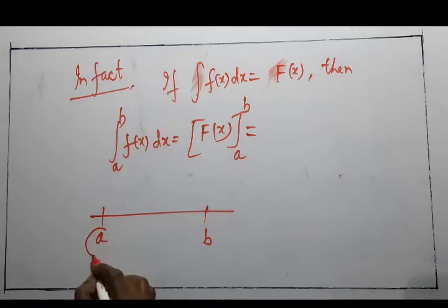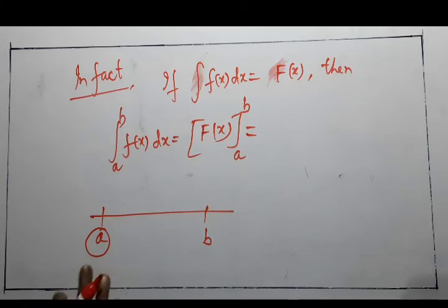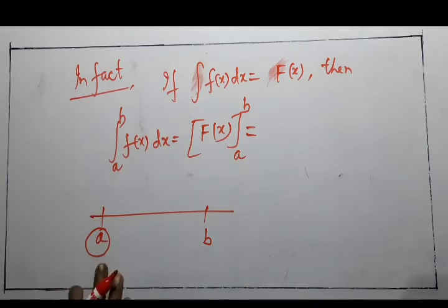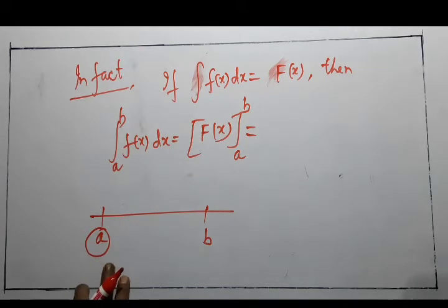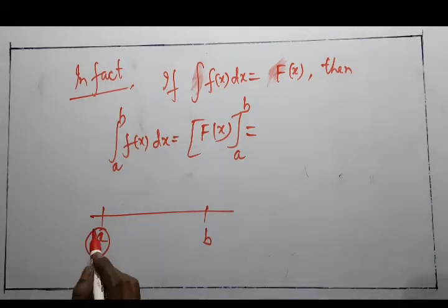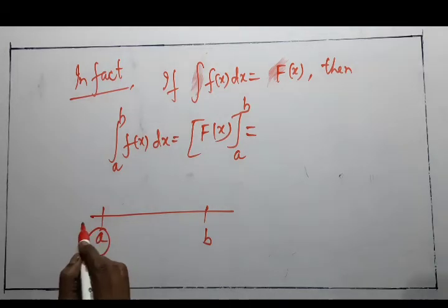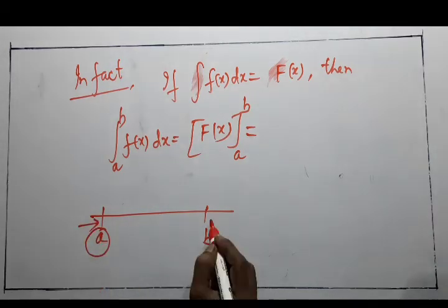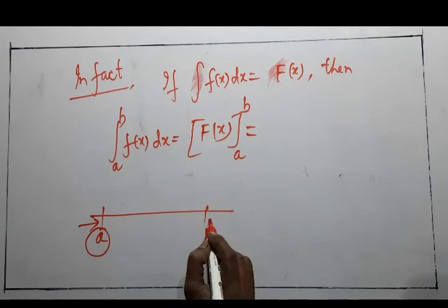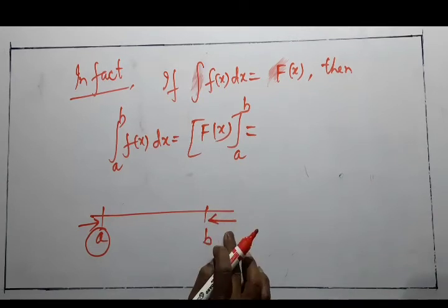Since the function is continuous at every point in [a, b], at any such point the left-hand limit equals the right-hand limit equals the value of the function. Note that at point a we cannot take a left-hand limit, and at point b we cannot take a right-hand limit.